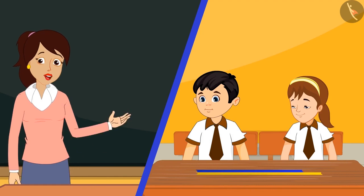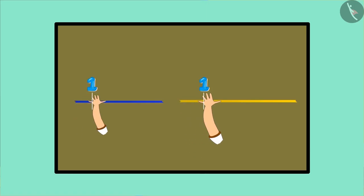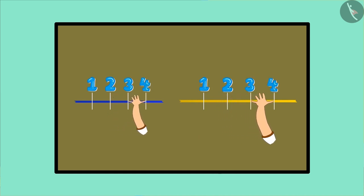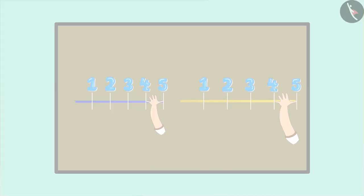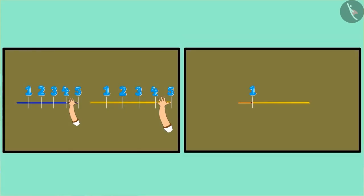This happened because the size of each hand is different. Therefore, you should measure with objects that have standard measurements, like a new pencil. If all of us measured with a new pencil and brought 5 pencil long ribbons, then the length of the ribbon would be the same because the length of a new pencil is almost the same everywhere.